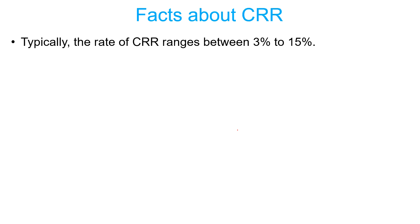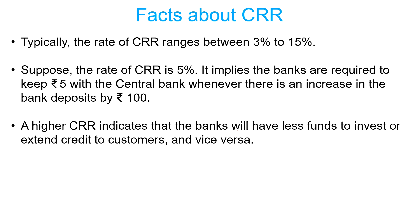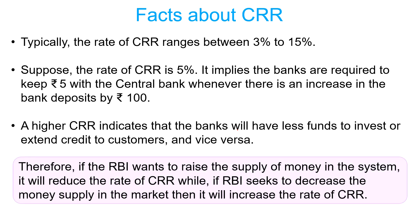Moving on to the facts about CRR. Typically, the rate of CRR ranges between 3% to 15%. Suppose the rate of CRR is 5% — it implies that banks are required to keep Rs. 5 with the central bank whenever there is an increase in bank deposits by Rs. 100. A higher CRR indicates that banks will have less funds to invest or extend credit to customers, and vice versa. Therefore, if RBI wants to raise the supply of money in the system, it will reduce the rate of CRR, while if RBI seeks to decrease the money supply, it will increase the rate of CRR.